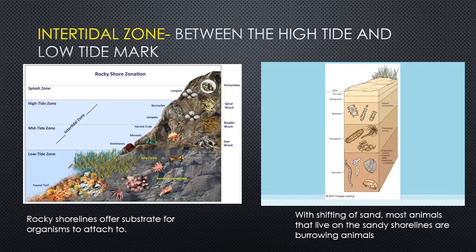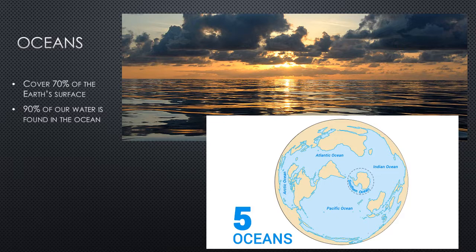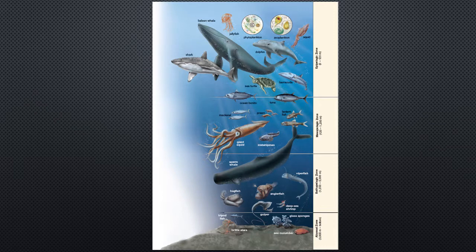Oceans cover 70 percent of the earth's surface and hold 90 percent of our water. We have five named oceans: the Arctic, Atlantic, Indian, Southern, and Pacific. Since 70 percent of the earth is covered in ocean, it's crucial to have knowledge about it. We did mention the deep ocean before.